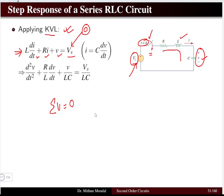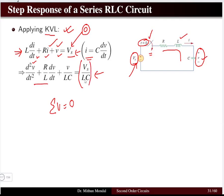This equation is an integral-differential equation, not a pure differential equation. We convert it by expressing current as C·dv/dt. Since we have two variables — current and voltage — we want a pure differential equation in only one variable, voltage. The resulting equation is a second-order differential equation, with the highest order of the voltage term being two.